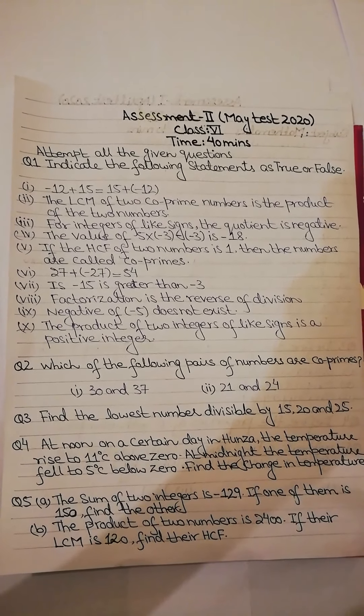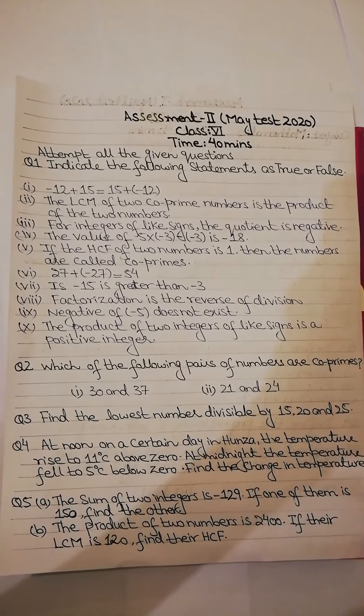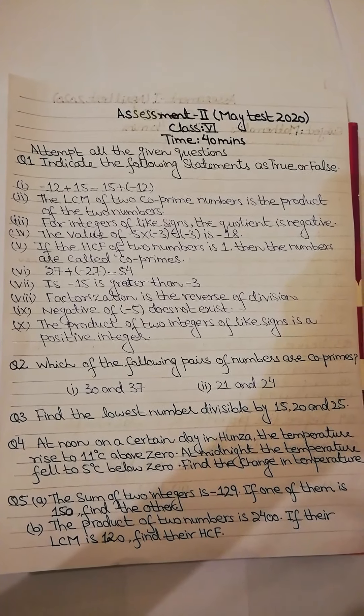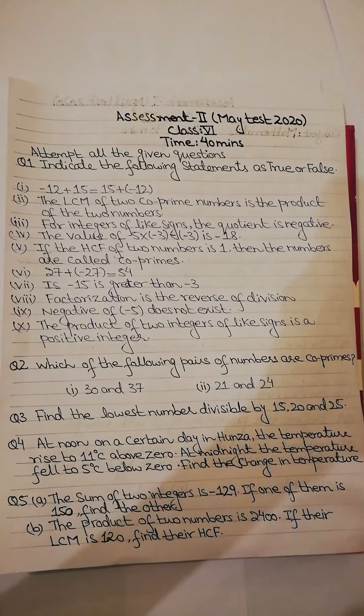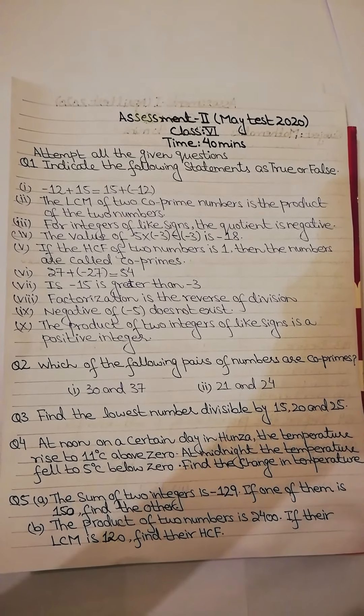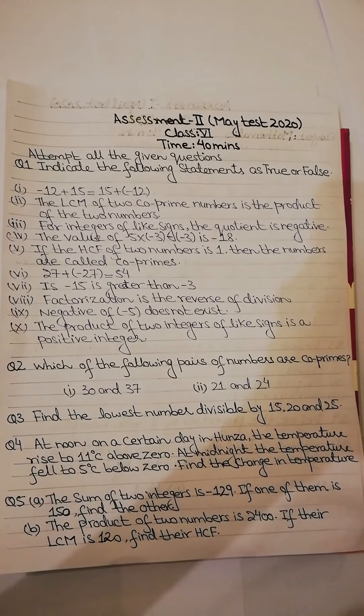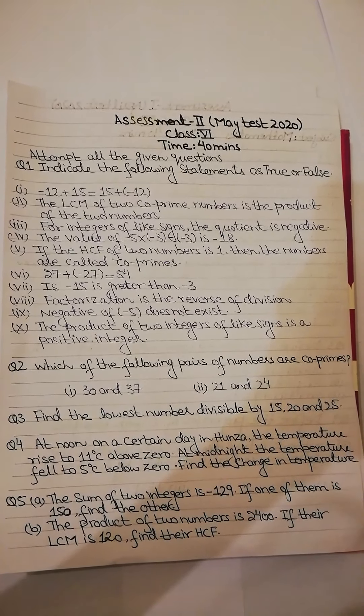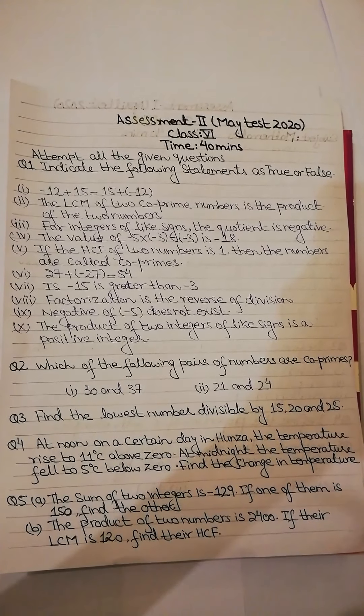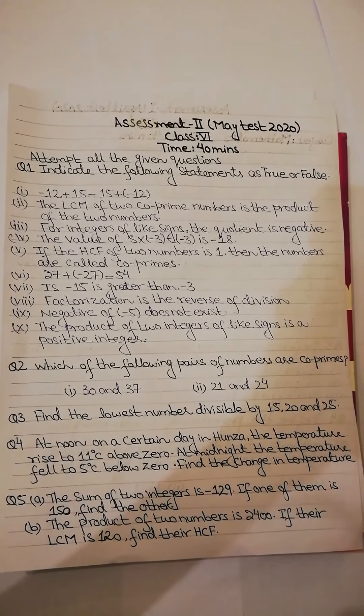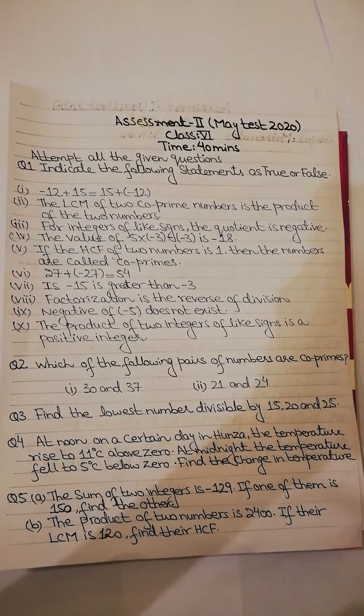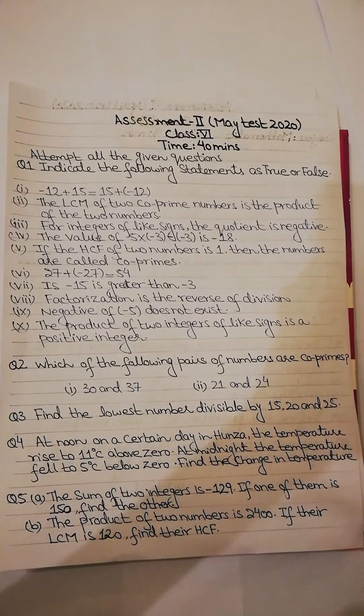Next is 5, if the HCF of 2 numbers is 1, then the numbers are called co-primes. Sixth, 27 plus minus 27 is equals to 54. Seventh is minus 15 is greater than minus 3. Eighth, factorization is the reverse of division. Ninth, negative of minus 5 does not exist. Tenth, the product of 2 integers of like signs is a positive integer.